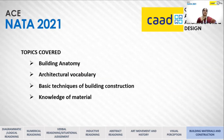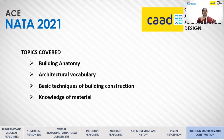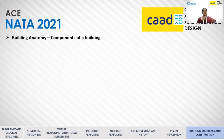Based on the NATA 2021 syllabus, the topics covered under this section are Building Anatomy, Architectural Vocabulary, Basic Techniques of Building Construction, and Knowledge of Materials. Starting with Building Anatomy — the components of the building.